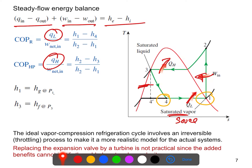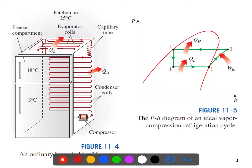At state 1, the refrigerant is saturated vapor, so we use the saturated vapor table to find h1. At state 3, it is saturated liquid, so we use the saturated property table for h3, calculated at the given temperatures P1 and P3. That covers the first part of this video. In the next video I'll discuss the TS diagram and the P-h diagram — the pressure-enthalpy diagram — and the correlations between them.